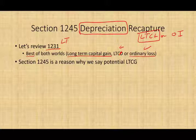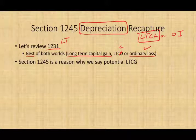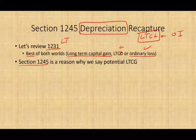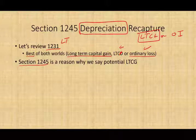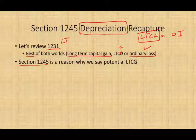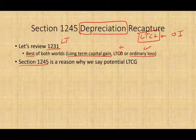When you sell an asset subject to depreciation and it would be treated as long-term capital gain, we must determine if there's any depreciation to recapture — this is where Section 1245 comes into play. The long-term capital gain is only potential, because if it's subject to depreciation recapture under Section 1245, that depreciation recapture will recharacterize the gain as ordinary income.